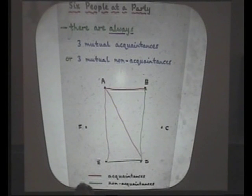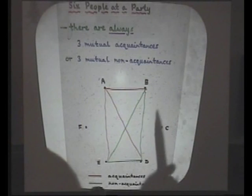How about B and E? Do they know each other? If they do, we get a red triangle, so we're done. So we assume they don't. And then we get a green triangle.